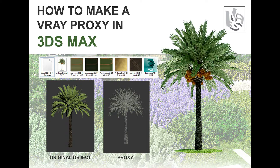Hello and what's up guys. Jan Misa po. I'm here with you today for how to make a V-Ray proxy in 3D Max. Proxies are useful when you want to fill a scene with instances of objects that have a very high polygon count, such as in this example I'm going to use — 3D trees.